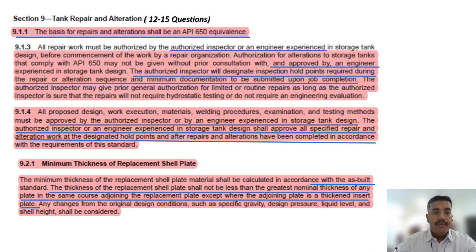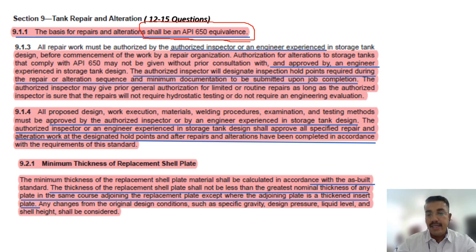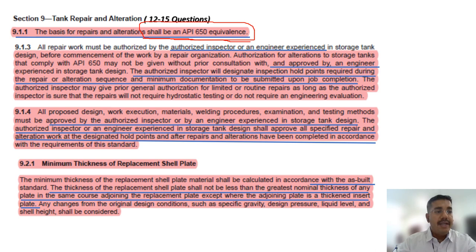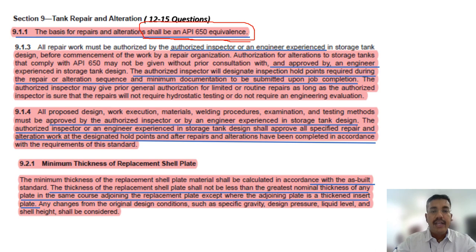The basis of repair and alteration shall be an API 650 equivalent. API 650 is for new construction tanks — there are no repairs there. But for API 653, when doing any repair or alteration, we must consider the basis of API 650 as if it were a newly constructed tank. The requirements in API 653 may be more stringent than API 650 — it is equivalent to 650 or higher.